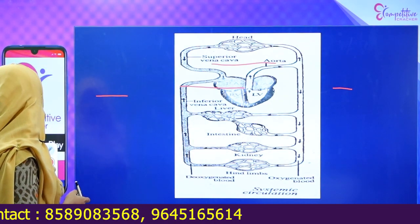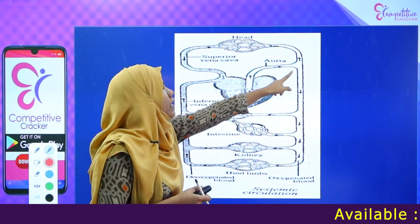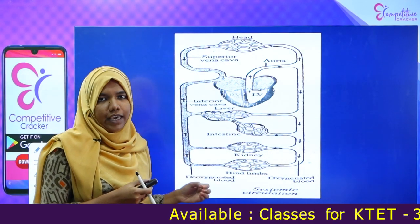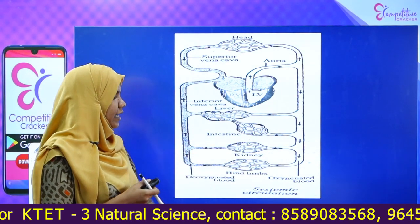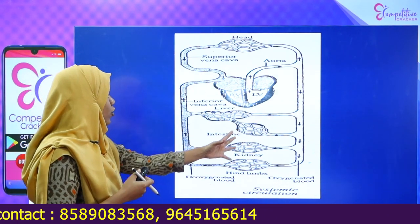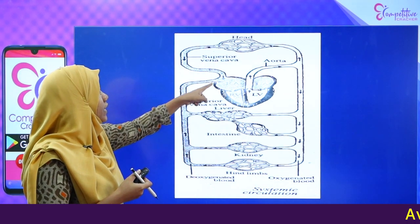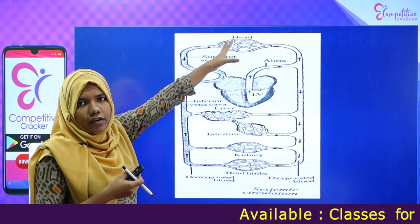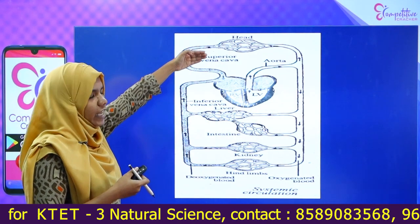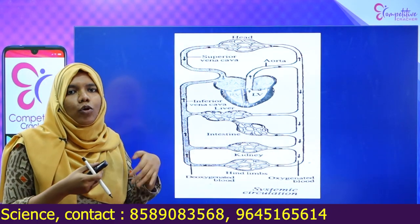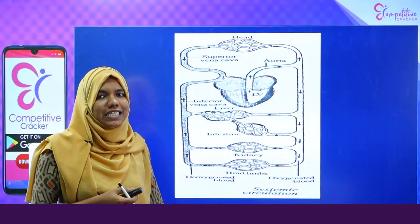This blood circulation starts in the Left Ventricle and circulates through the body parts — the intestine, kidney, and other organs. The deoxygenated blood is then collected into the Inferior Vena Cava from the lower body parts and the Superior Vena Cava from the upper body parts, and returns to the Right Atrium. This is systemic circulation.